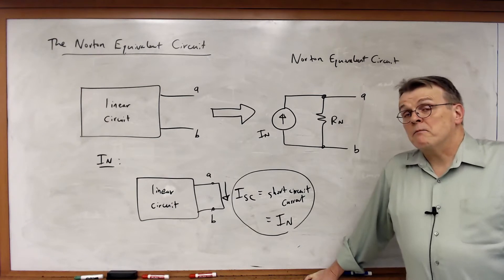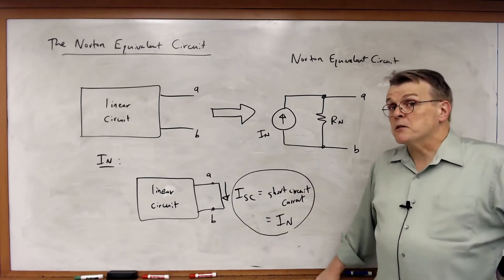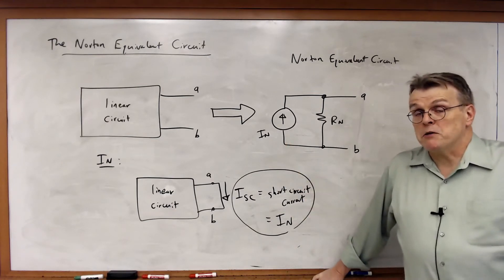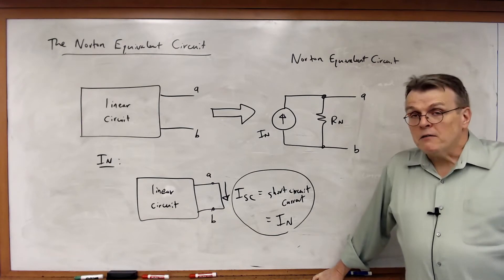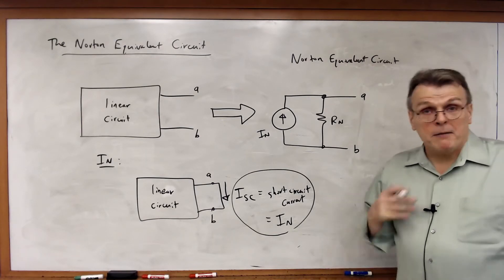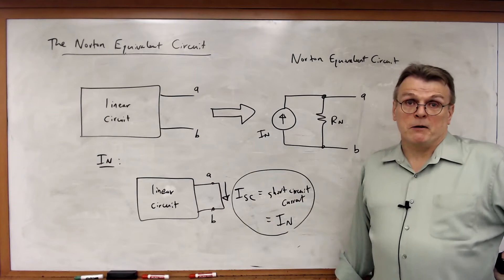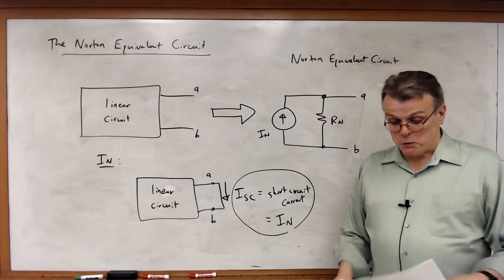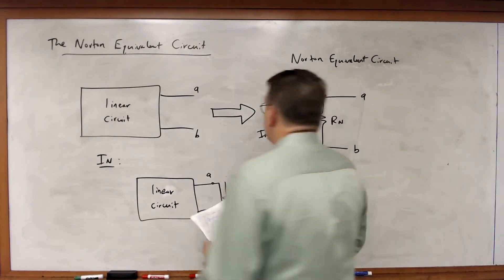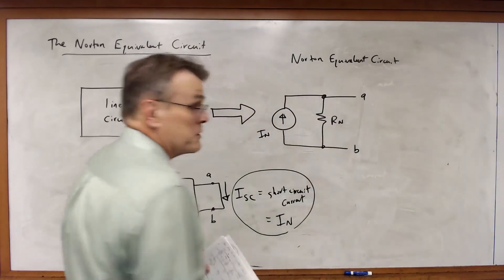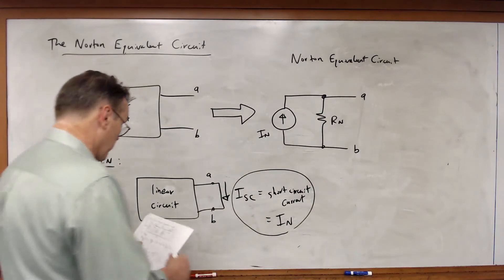Since the Norton equivalent circuit is simply the source transformation of the Thevenin equivalent circuit, my recommendation: do the Thevenin, and then do the source transformation. That's the quickest way to work it. So let's do a quick example of how to find the Norton equivalent circuit.